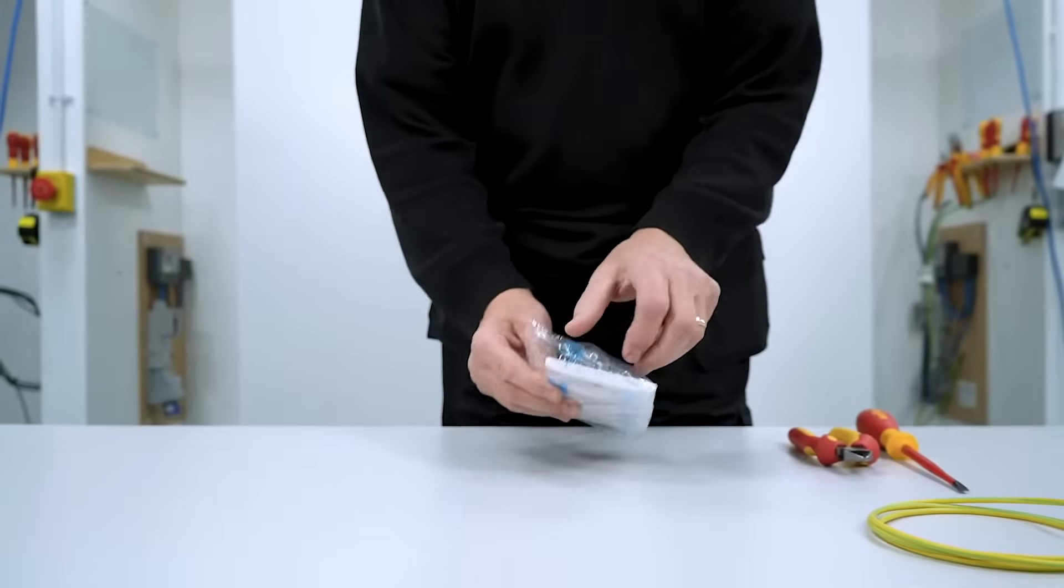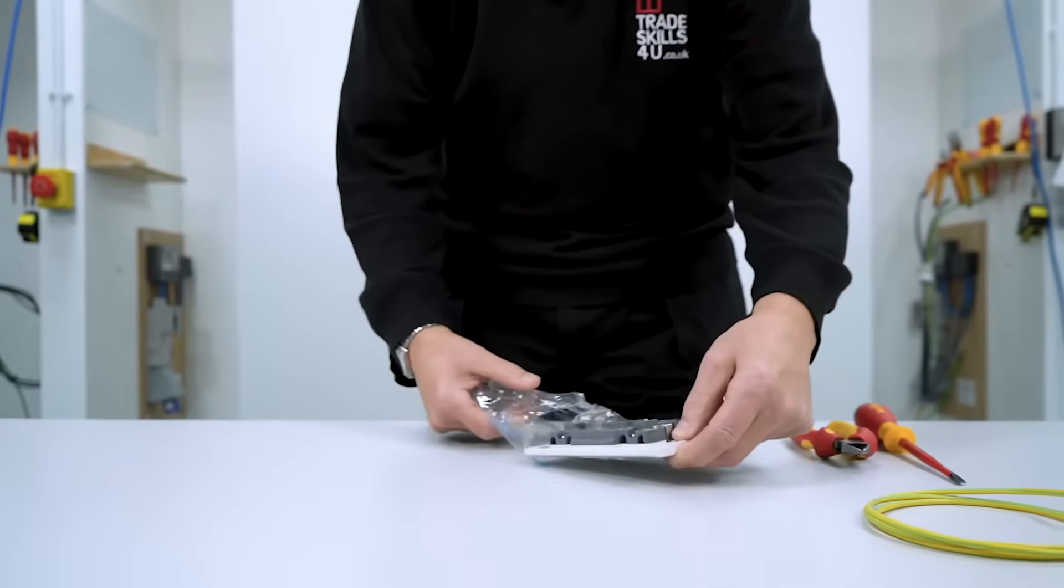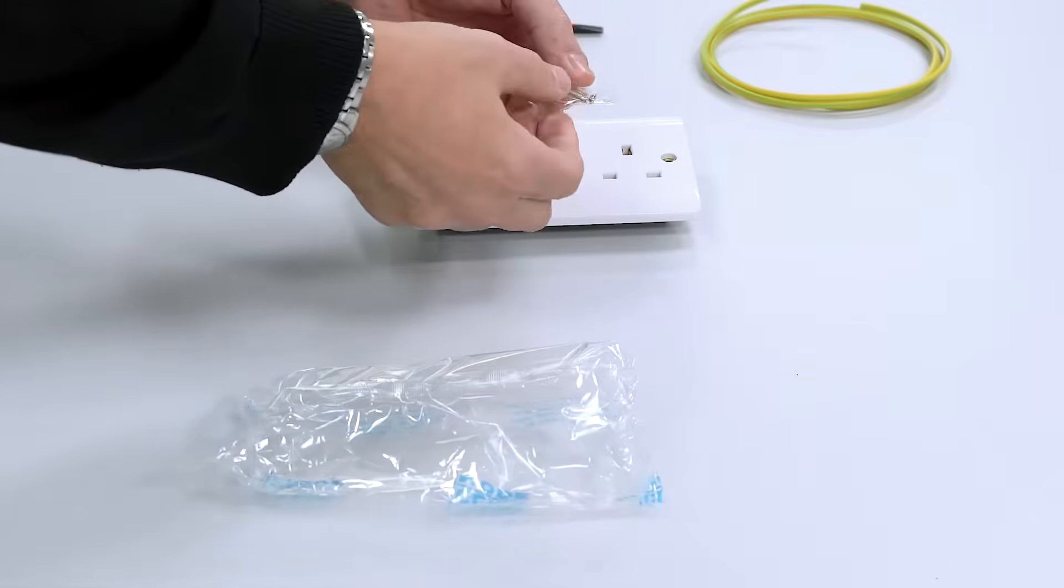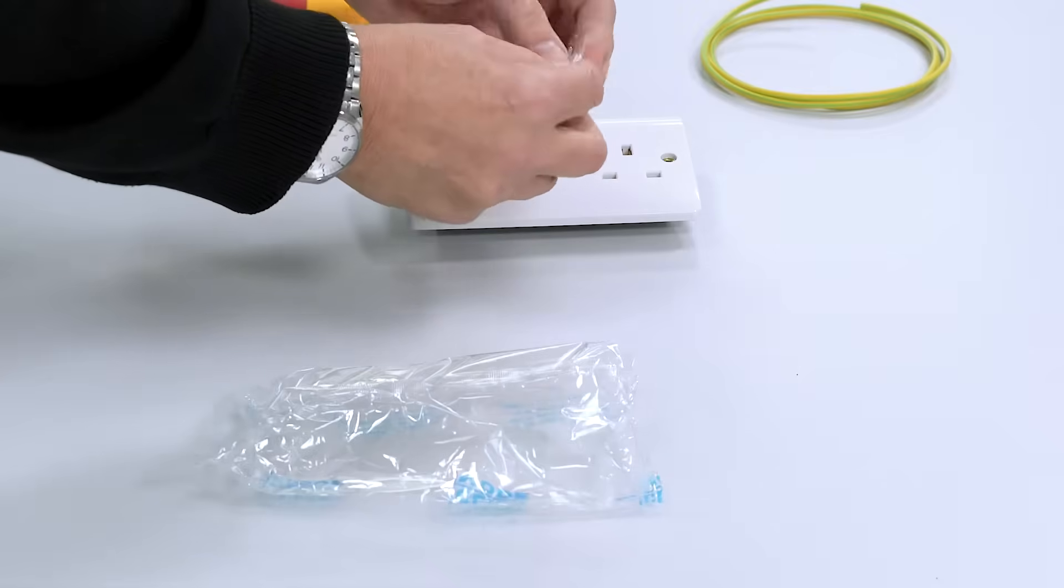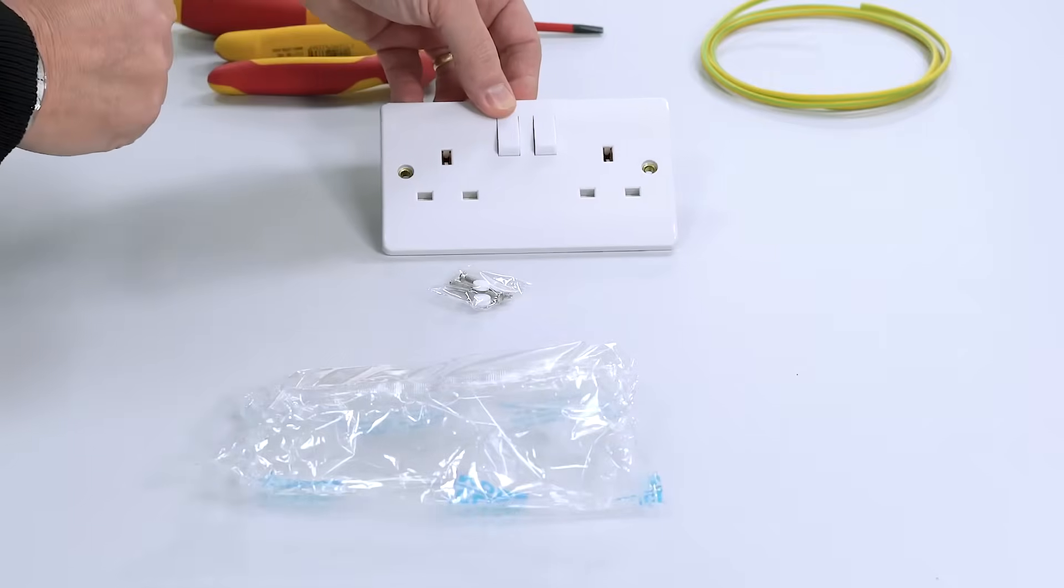So let's have a look what's inside the pack. Here's our socket and here's our terminal screws. We've got two little white caps here that we'll be putting in to make it look nice when we've finished.